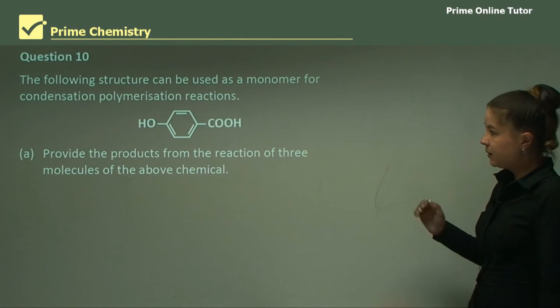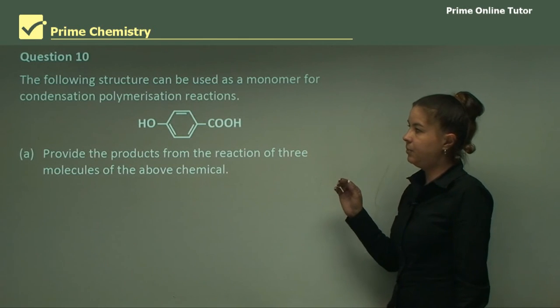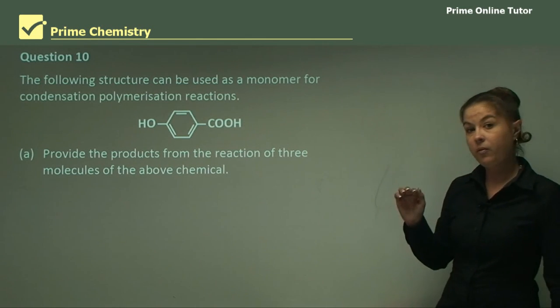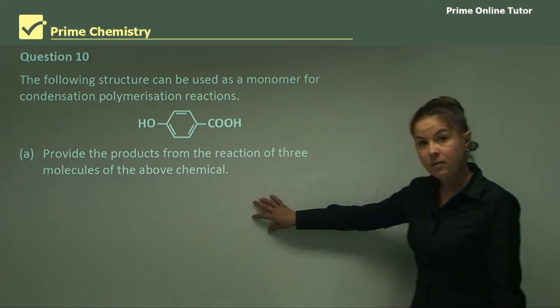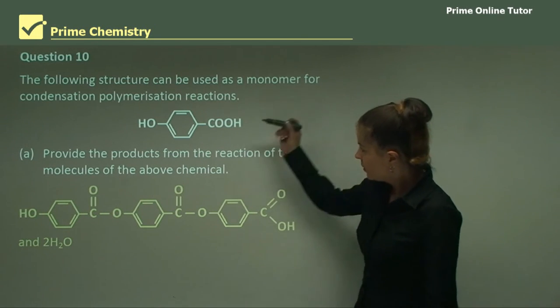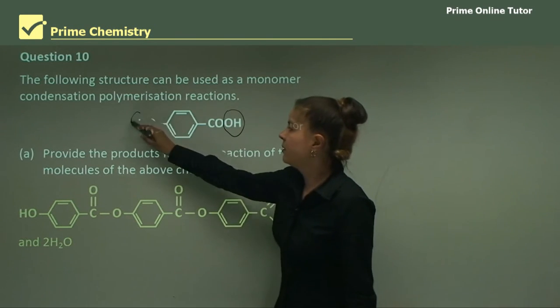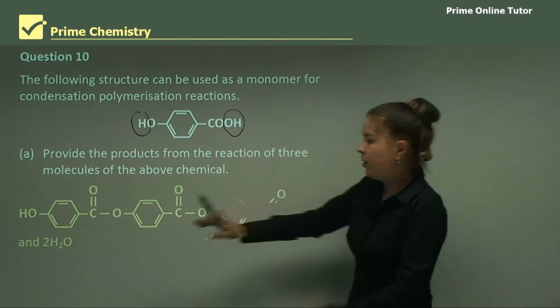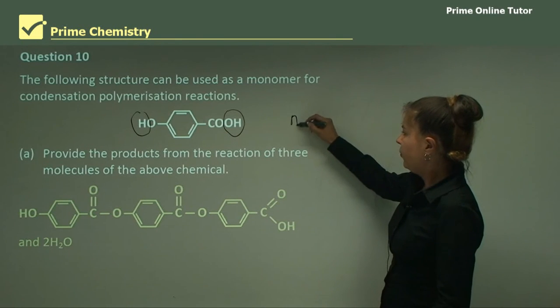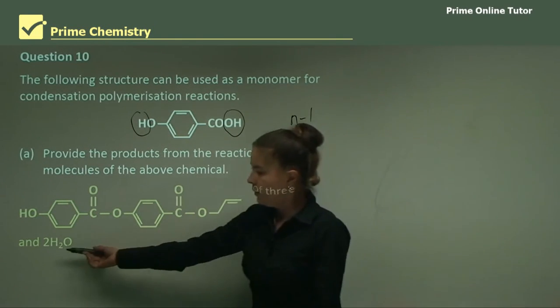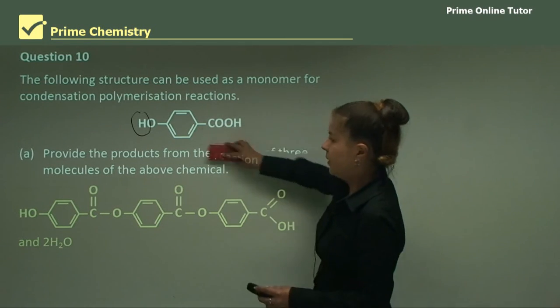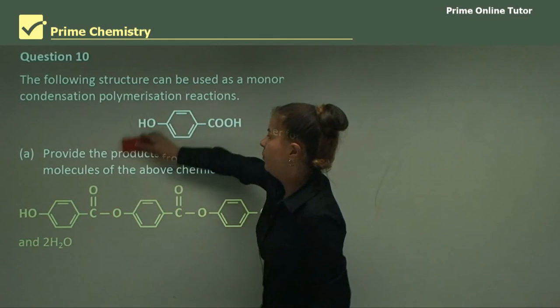Finally, question 10. The following structure can be used as a monomer for condensation polymerization reactions. Part A. Provide the products from the reaction of three molecules of the above compound. So if we draw three of these molecules and we put them together and rip off water, what we get is this structure here. So what we've done is we've taken off OH from that end, we've taken off H from that end, flipped it over and stuck it together to get this. And thus, because there's three molecules, you get, if you remember, N minus one byproducts. So three minus one, two, you're left with two waters. So that's how you do that reaction. So redraw what you get in the question, flip it around, take off the water, and you can draw what your product will be.